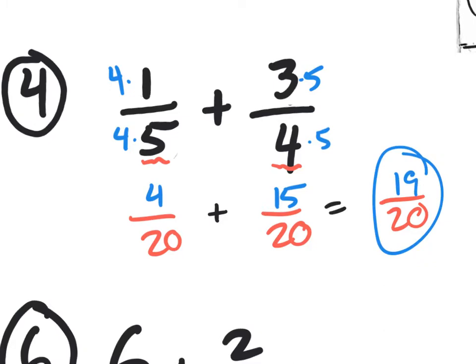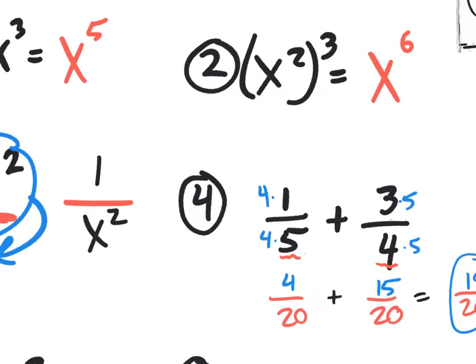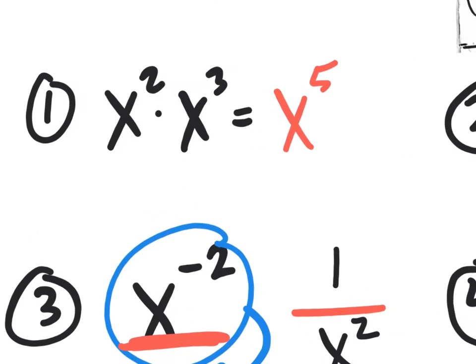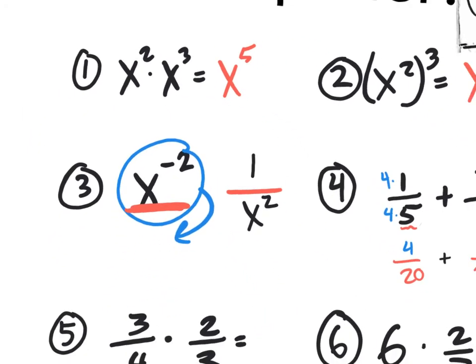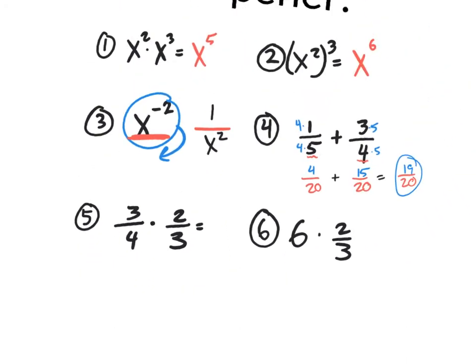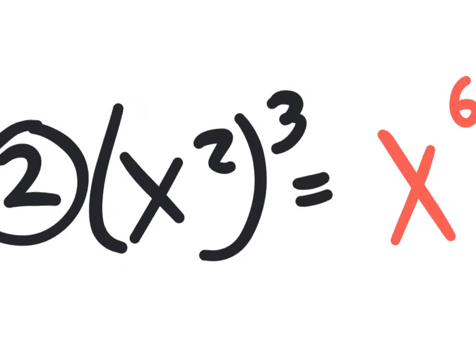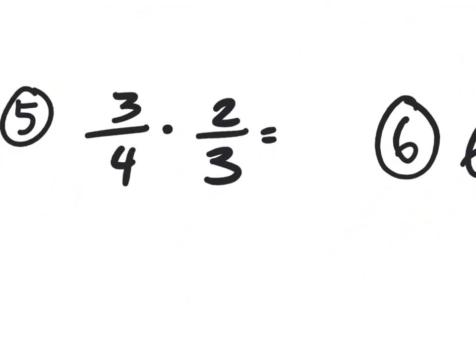You're not going to be asked straight up to add fractions, but they will give you something like x to the 1/4 times x to the 2/3, and you're going to have to add 1/4 and 2/3. You need to know how to add fractions to answer these. Likewise, you might have a power to a power, but instead of integers 2 and 3, you might have two fractions — which means you'll need to multiply fractions.